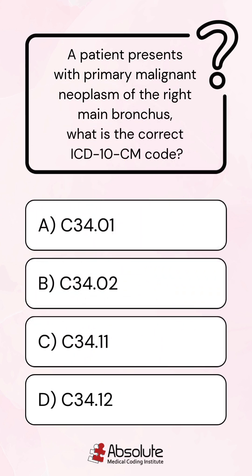A patient presents with primary malignant neoplasm of the right main bronchus. What is the correct ICD-10-CM code?